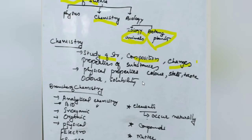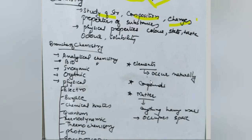When assessing a substance's physical properties, the first thing we observe is color, then the state — whether it is liquid, solid, or gaseous — then taste, whether it is sweet or bitter, then odor, whether it has a pleasant or unpleasant smell, and solubility, whether it is soluble in water, alcohol, or other substances.